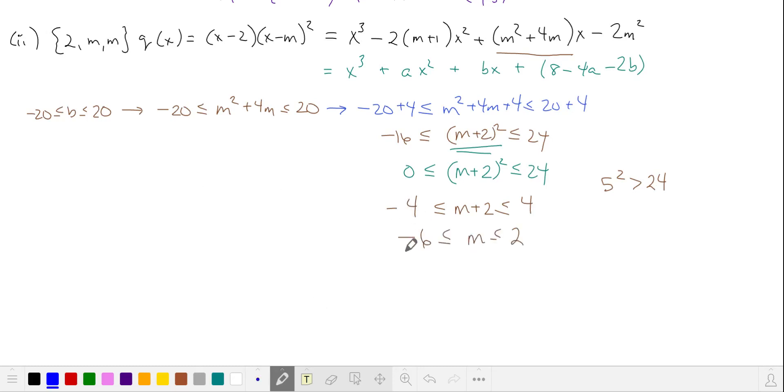So our restriction on b puts m between negative 6 and 2. Let's check A, and we'll substitute. Divide by 2 and subtract 1. And again, we have our interval for m is larger than it was for our restriction on b. So we'll pick this one. The number of valid values for m, remembering to exclude 2, is 8, which is also the number of valid values of a and b.